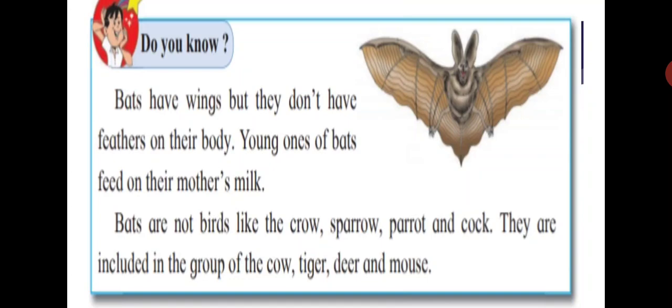Do you know, students? Bats have wings but they don't have feathers on their body. Young ones of bats feed on their mother's milk. Bats are not birds like the sparrow and cock. They are included in the group of cow, tiger, deer, and mouse — the group of animals that suckle their young.